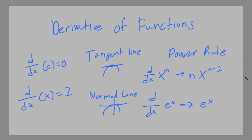Today we're going over the derivative of a function. There are a few things to note. Always remember that d/dx of a constant is always 0 — so the derivative of a constant like 26 or 87 is 0. e is also considered a constant; it's around 2.7-something. Also, the derivative of x is always 1.